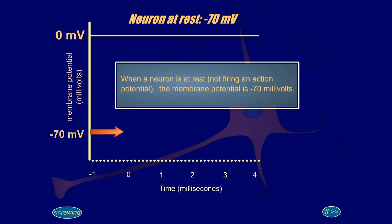When a neuron is at rest, not firing an action potential, the membrane potential is negative 70 millivolts.